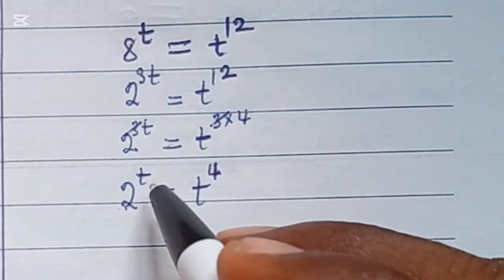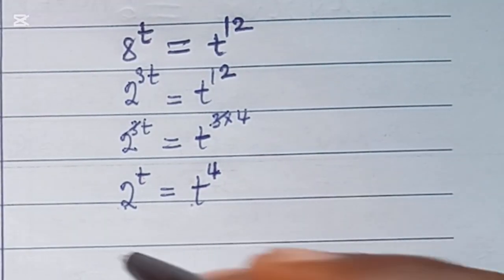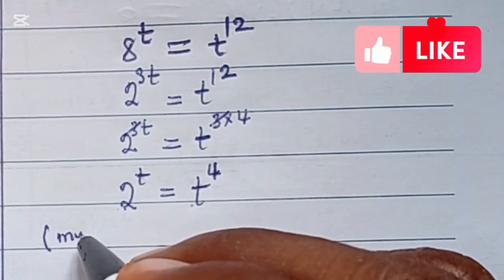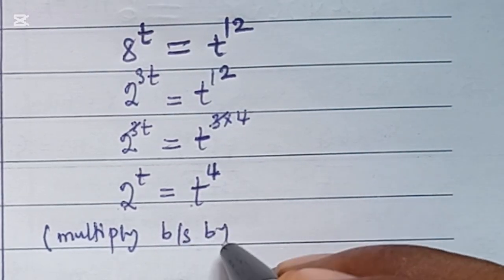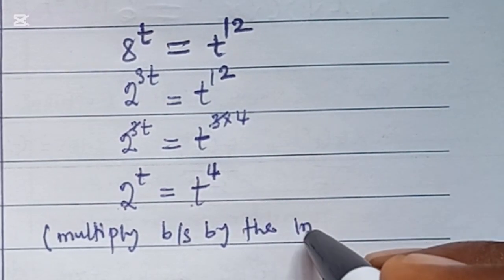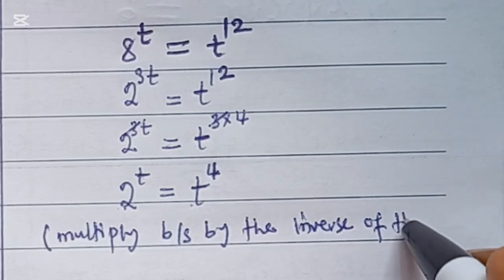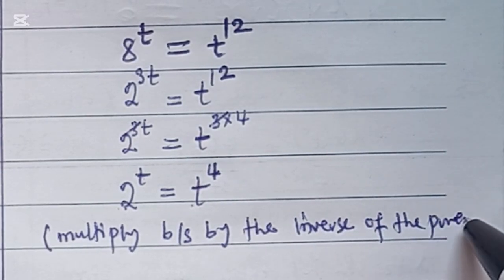2 and 4 should be on one side, t and t should be on the other side. To do that, what you simply do is multiply both sides by the inverse of the powers.